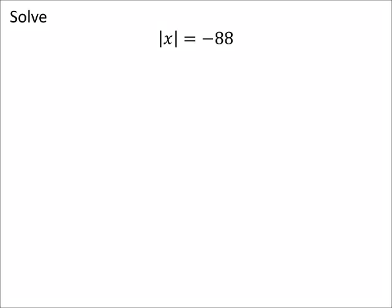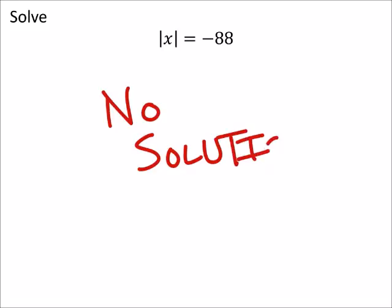All right, again, this is the absolute value of x equals negative 88. Bam. Excellent. This one has no solutions because an absolute value can never be negative.